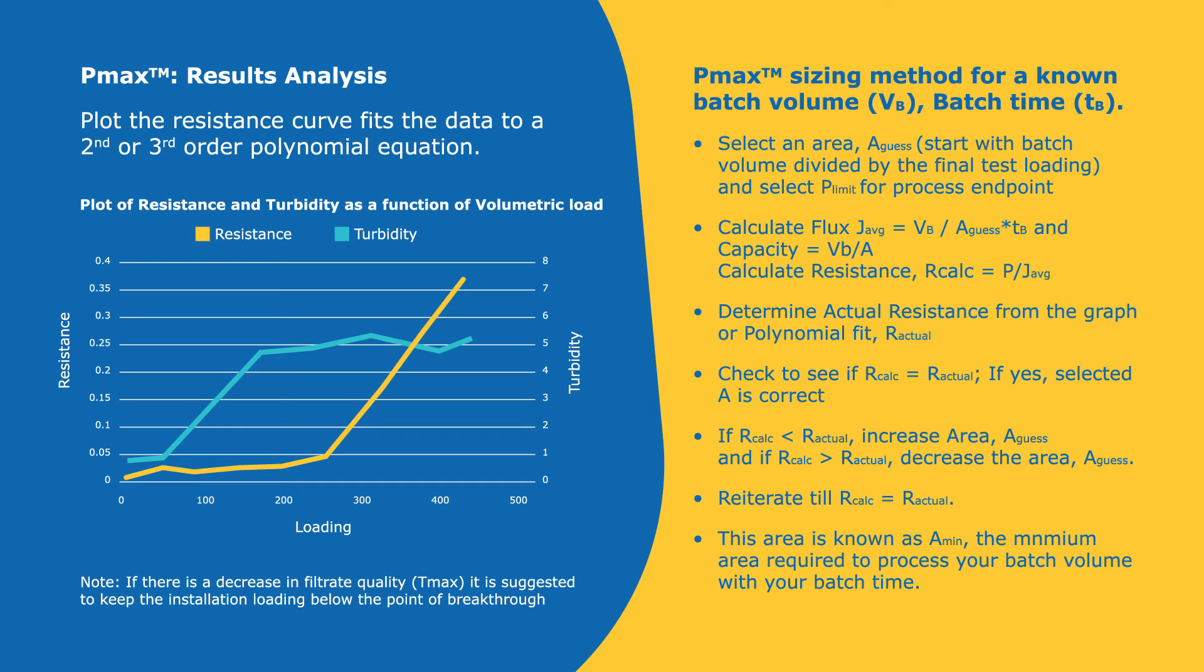So you would have a known batch volume and a known batch time. You would select an area, which we will call a guess. A good first guess would be starting with your batch volume divided by your final test loading. You would select a pressure limit for a process endpoint. So typically if you have two or three processes in a train, two or three filters in your process train, and your maximum pressure for that part of the operation was 20 to 30 PSI, it would be a good starting point to just divide it by the number of filters that you have in your train. So say you have 30 PSI and you have three filters in your train, I would say start with 10 PSI.